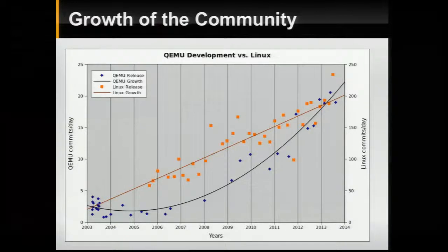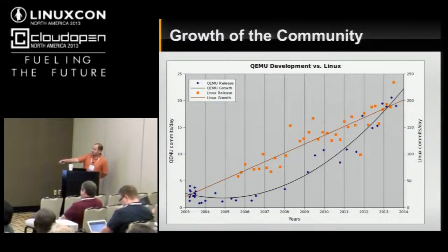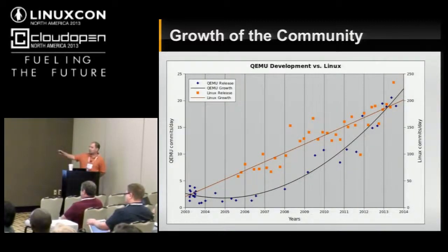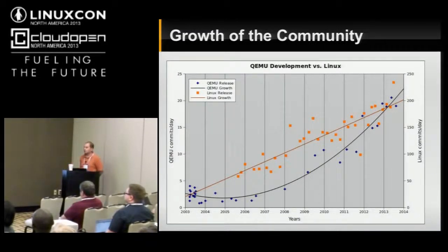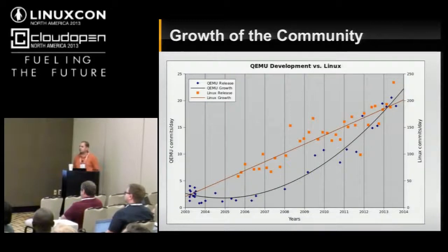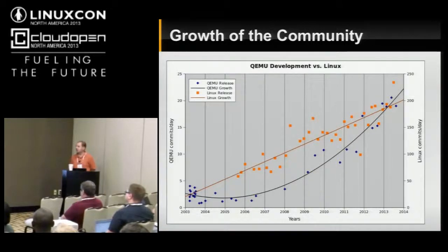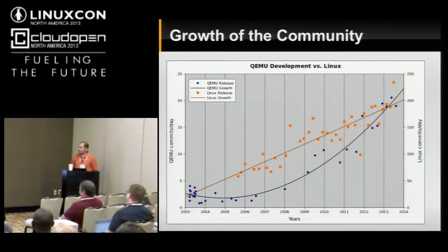This is a comparison of Linux and QEMU development over time — commits per day. Linux is about an order of magnitude bigger in terms of commits and lines of code, so QEMU is roughly one-tenth of Linux in size. What you can see in this graph is very aggressive exponential growth. Not only are we a rapidly growing project, but we're growing at a very fast rate even compared to another fast-growing project like Linux.